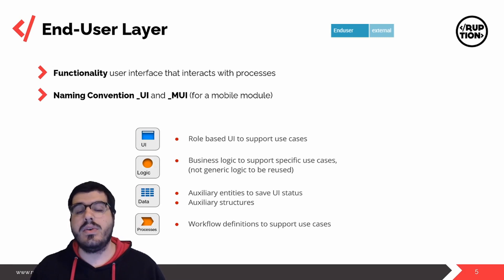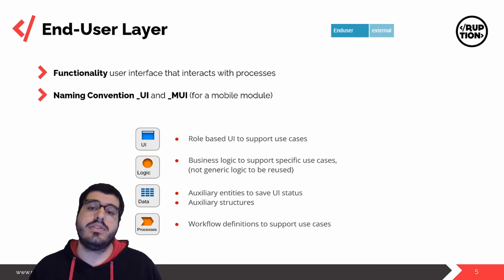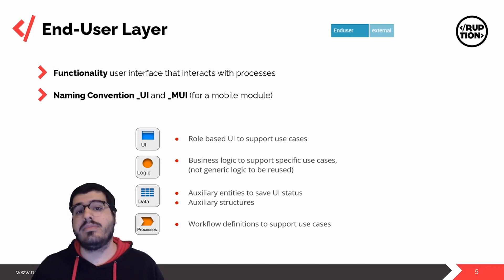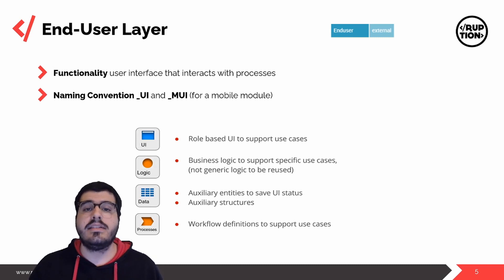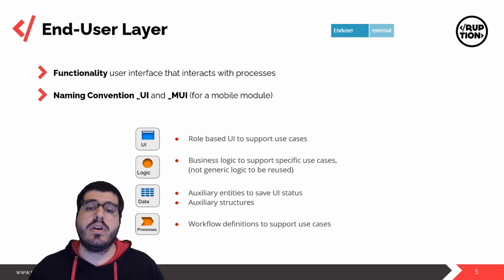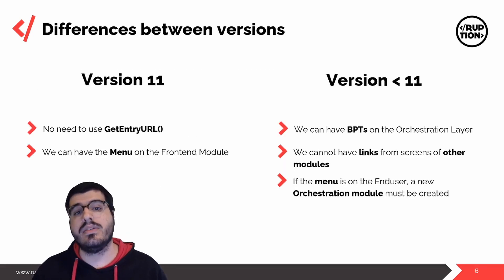In terms of elements, you have the UI — screens built for your use cases — then you have the logic, which is business logic adapted to those use cases; it's not reusable, it's just for that situation. Moving on to data, we have auxiliary entities and auxiliary structures for your UI, and the processes are workflow definitions to support your use cases. But we still haven't gone through all the differences between versions, so let's take a look at them.